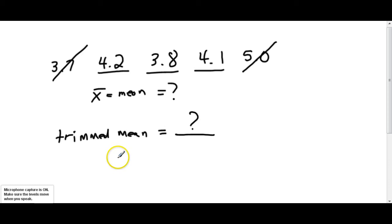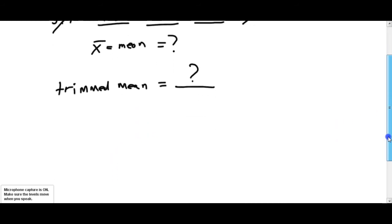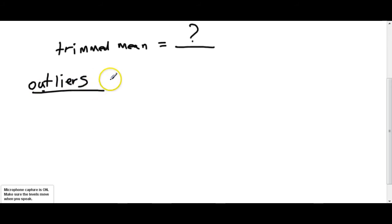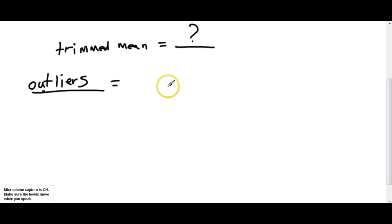Why did they do this? It was to make it more fair and to take the bias, either negative or positive, away from a particular score. For us when calculating statistics, we might have some odd numbers that are way different than the normal set — what we call outliers. An outlier is just a data point that is way different than the others, lying outside the normal set of data points.